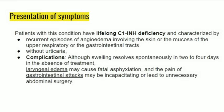Patients with hereditary angioedema have lifelong C1-inhibitor deficiency, characterized by recurrent episodes of angioedema involving the skin or mucosa of the upper respiratory or GI tracts, occurring without urticaria. Although swelling resolves spontaneously in 2 to 4 days, it may lead to complications in two specific locations: laryngeal edema may cause fatal asphyxiation, and GI tract attacks may cause incapacitating pain leading to unnecessary abdominal surgery.